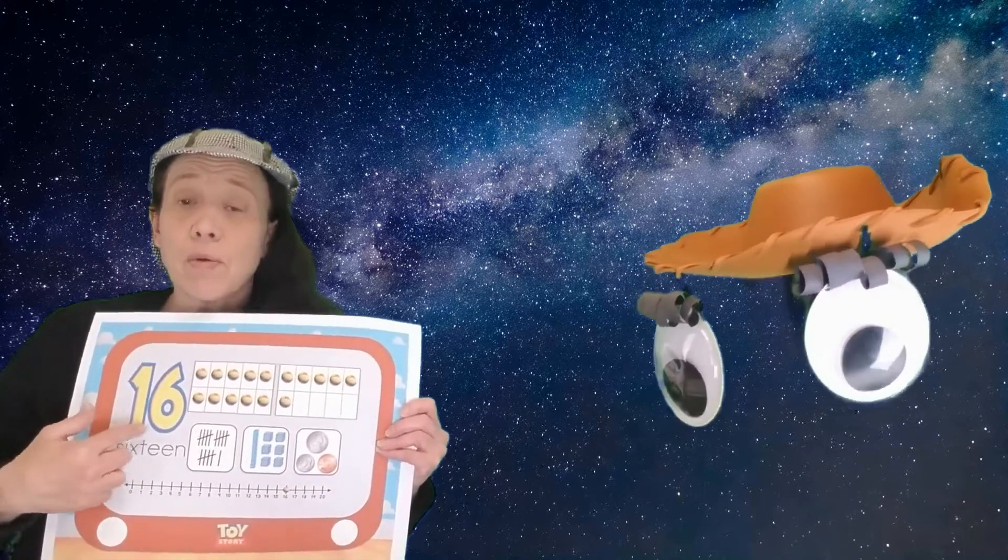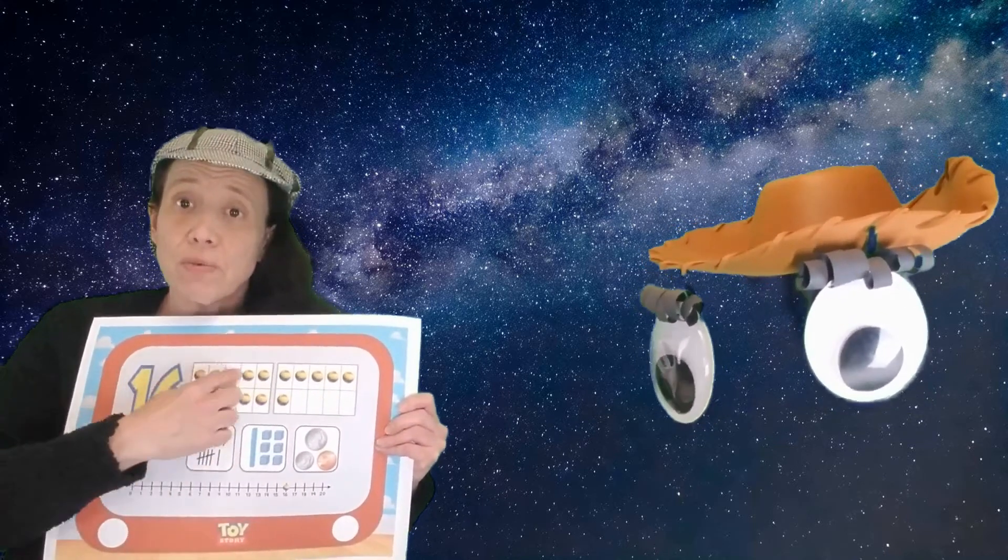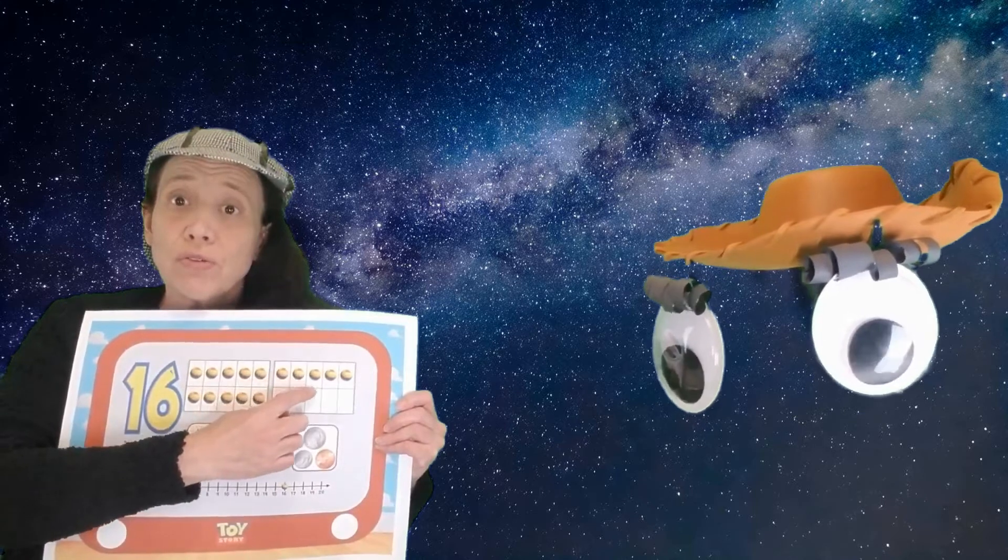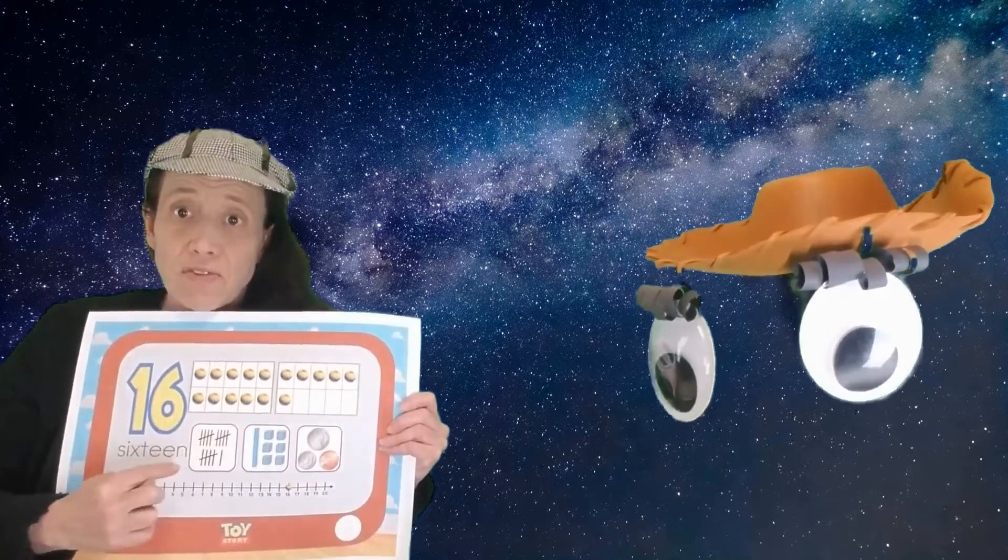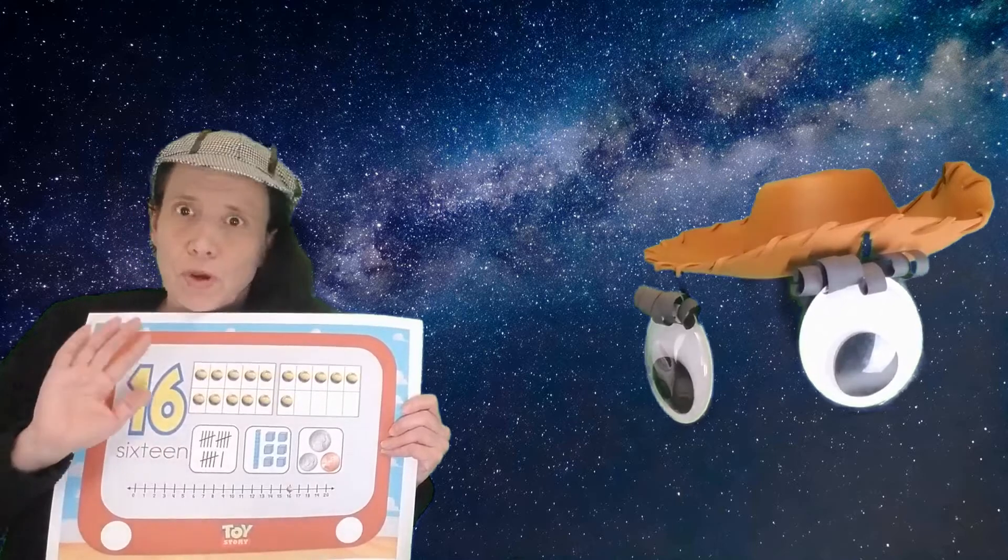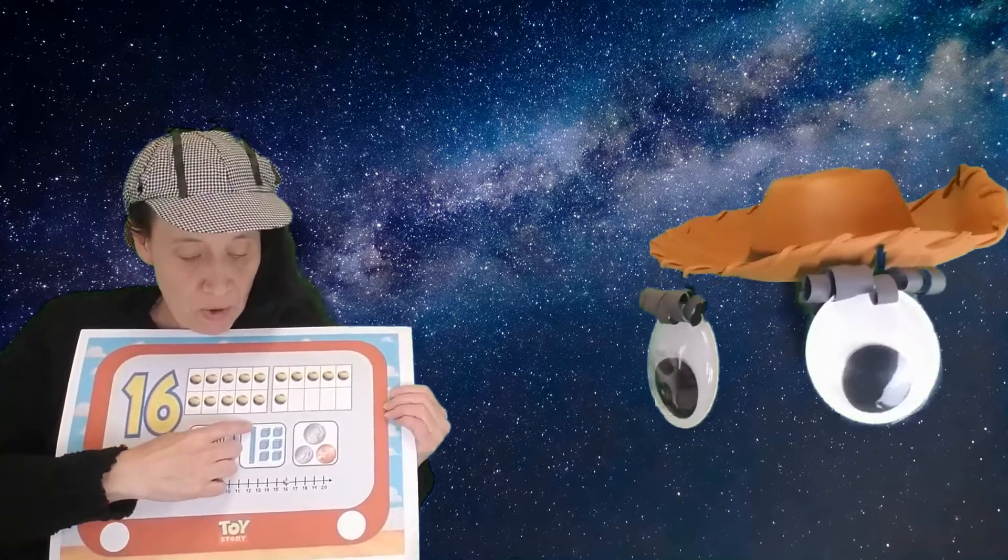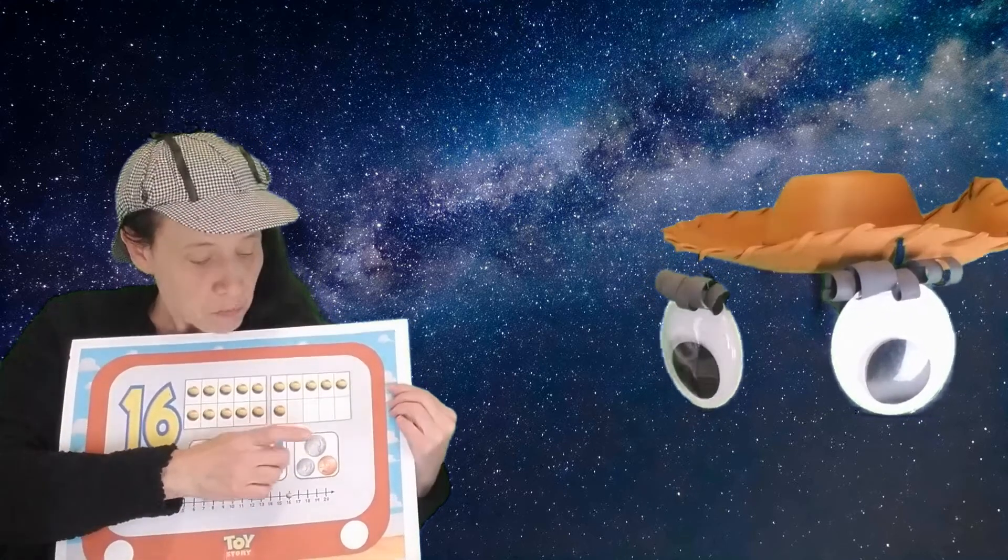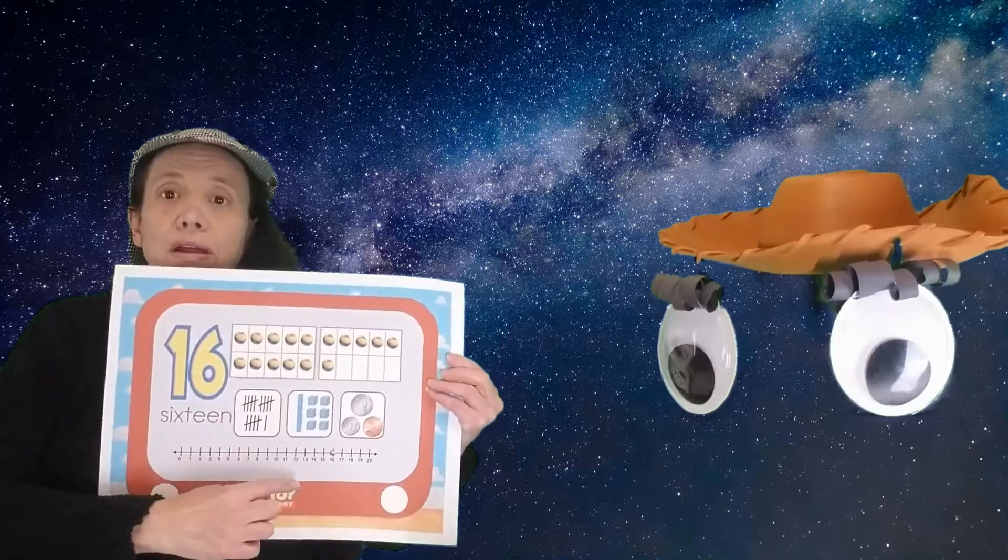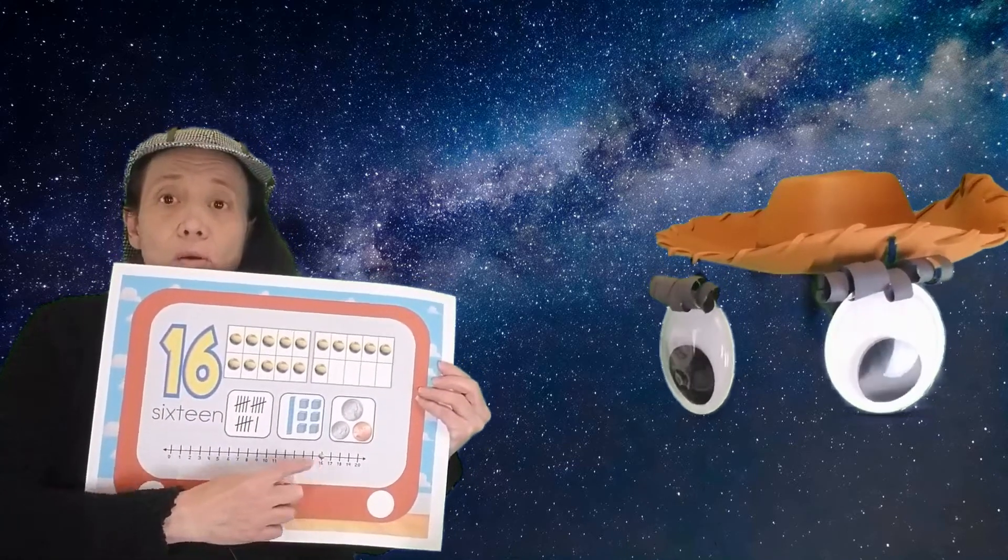Alright. And then what number comes after 15 X-Rice? 16. 16. And we write that with a 1 and a 6. Our first 10 frame is full. Then we're going to have 1, 2, 3, 4, 5, 6 in the next 10 frame. We are going to have 5, sorry, 3 groups of 5 and 1, 1. Okay? We have 1 group of 10, and we have 6 ones with our blocks. We have a dime, a nickel, and a penny for money. And on our number line, we're all the way over here right after 15.